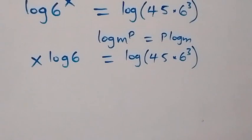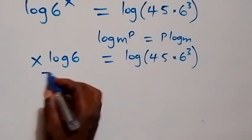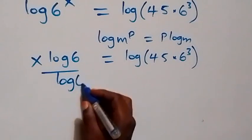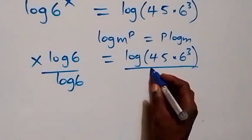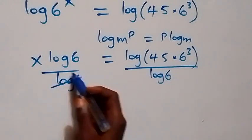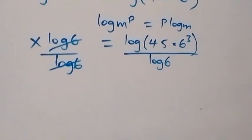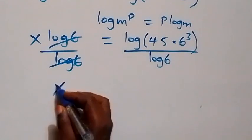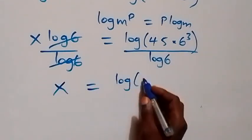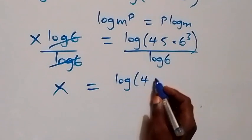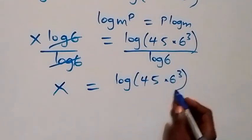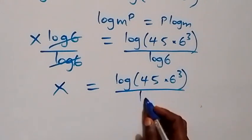Next step here, we divide both sides by log 6. We divide both sides by log 6, so log 6 cancels each other. And we have x left, which is equal to log of 45 times 6 raised to power 3, over log 6.